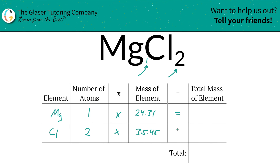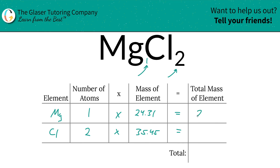And then, to find the total mass of each element, you're simply going to multiply across the row. So the total mass of magnesium is going to be 24.31 units of mass, and for chlorine it's going to be 70.90.